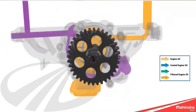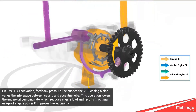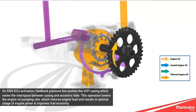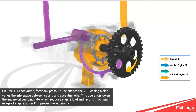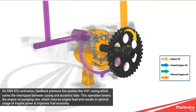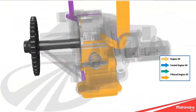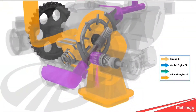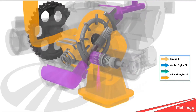The engine computer instructs a solenoid valve to divert the oil pressure to behind the oil pump casing, which varies the interspace between the casing and the eccentric lobe. This operation lowers the engine oil pumping rate, which reduces engine load and results in optimal usage of engine power. Thus, the variable oil pump helps in improving the fuel efficiency of the car.